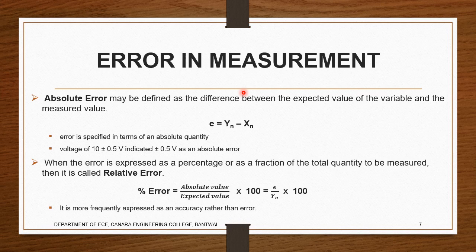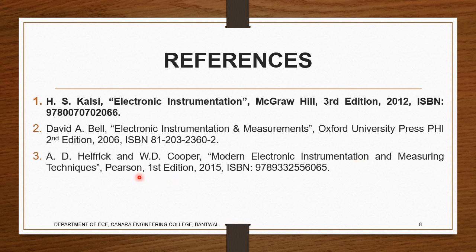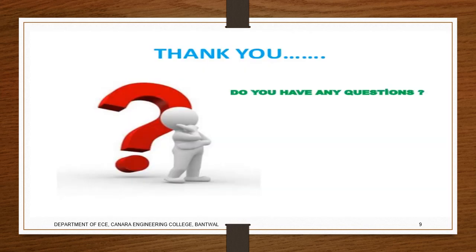I think we have all discussed and understood what error is and the different types of basic concepts. These are the references used: the prescribed textbook is David Bell's 'Electronic Instrumentation and Measurement,' and another is A.D. Helfrick and W.D. Cooper's 'Modern Electronic Instrumentation and Measurement Techniques.' Most of the concepts will be referred from the prescribed textbook. If you have any doubts, please ask me. Thank you.